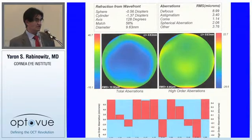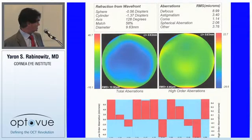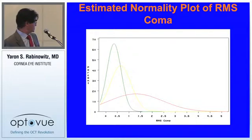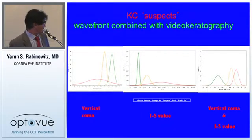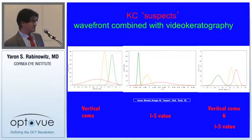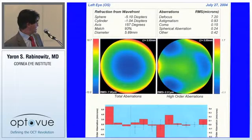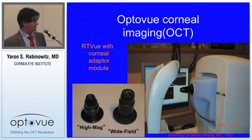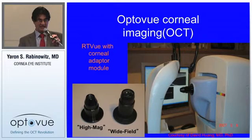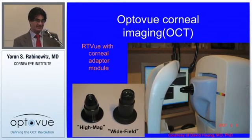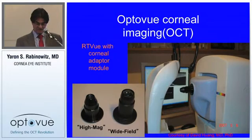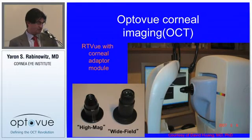Vertical coma is an early sign in subtly abnormal topography. Looking at RMS coma in three groups — normal, suspect, and keratoconus — you can separate them very nicely. Taking the product of vertical coma and the IS value was more accurate than either alone in differentiating keratoconus suspect, normal, and keratoconus groups. We used that routinely until the OCT came along, which is probably one of my favorite devices for complementing refractive surgery screening.